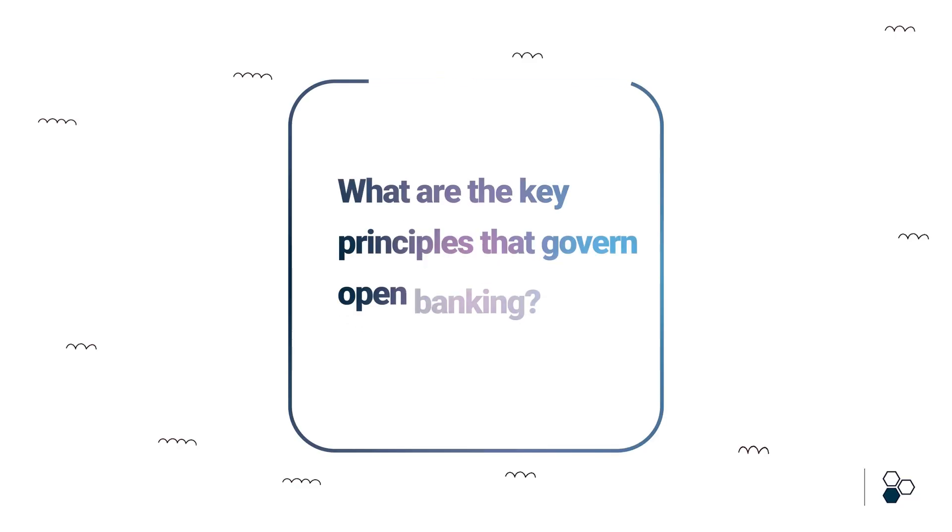The key principles governing open banking are: first, consent — you cannot have access to consumer data without the consent of the consumer. Second is the secure flow of data — when banks or financial companies open up consumer data, it needs to be done in a secure way.